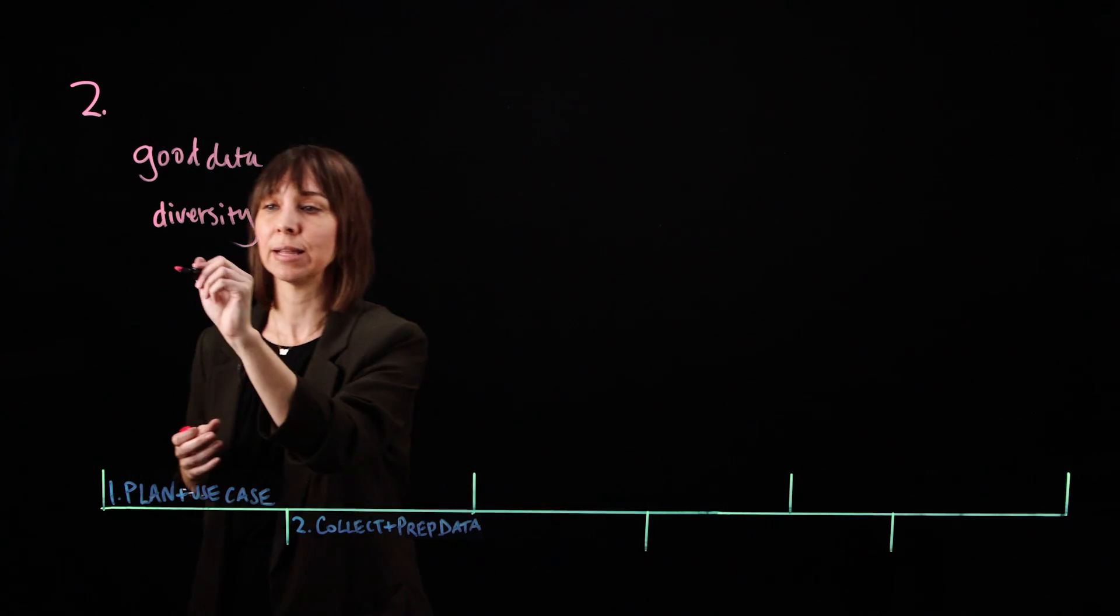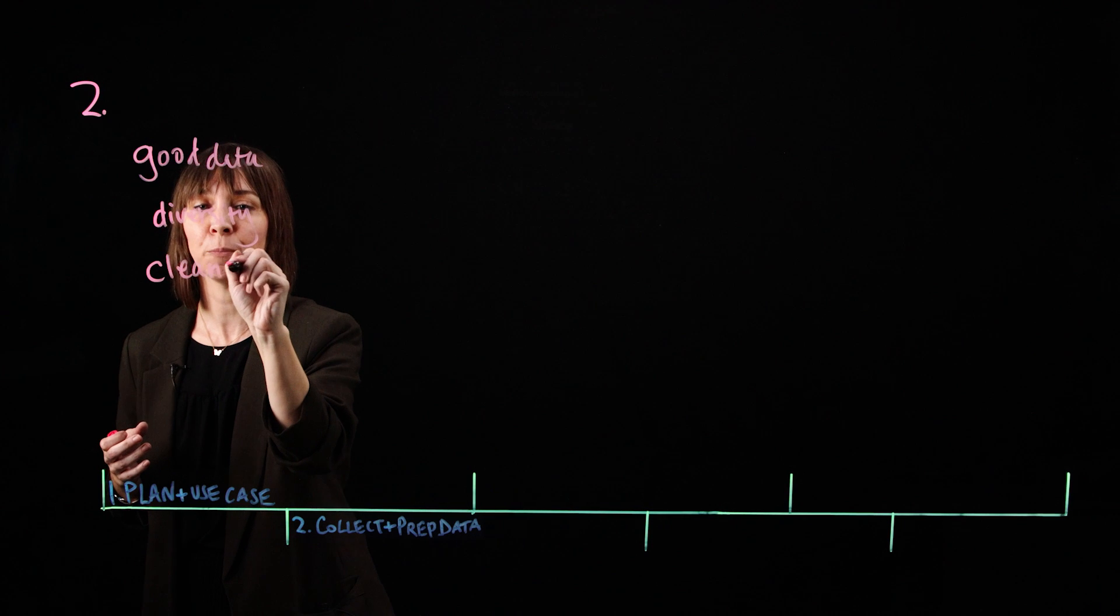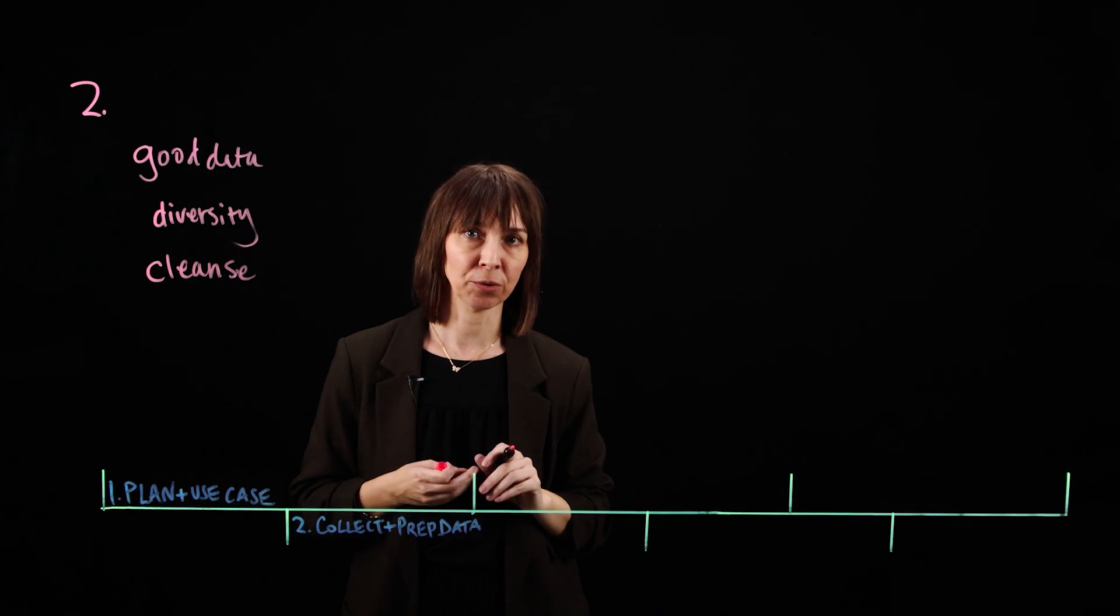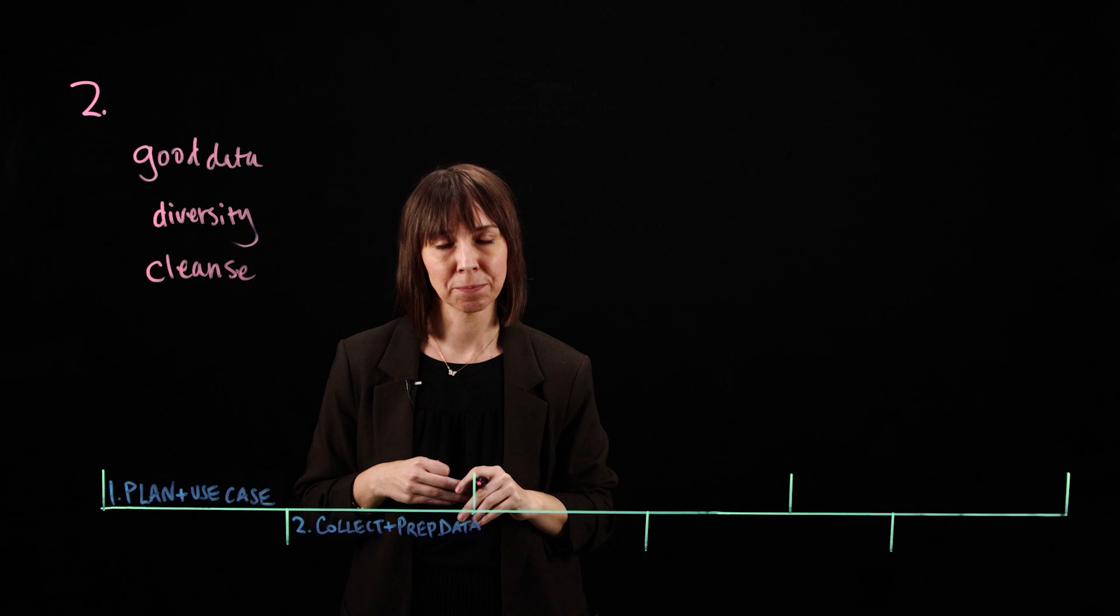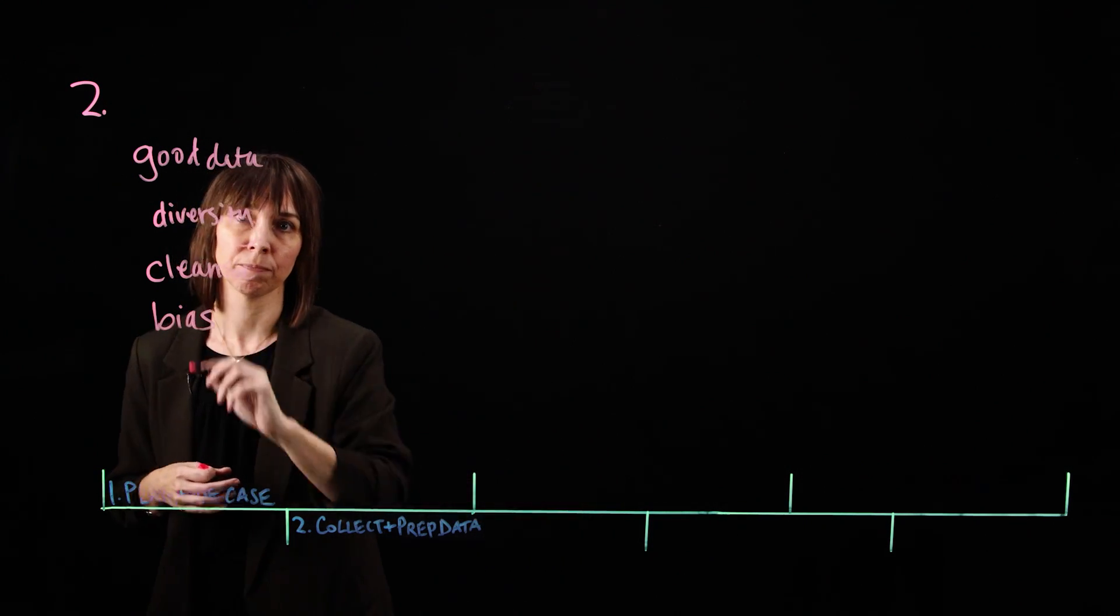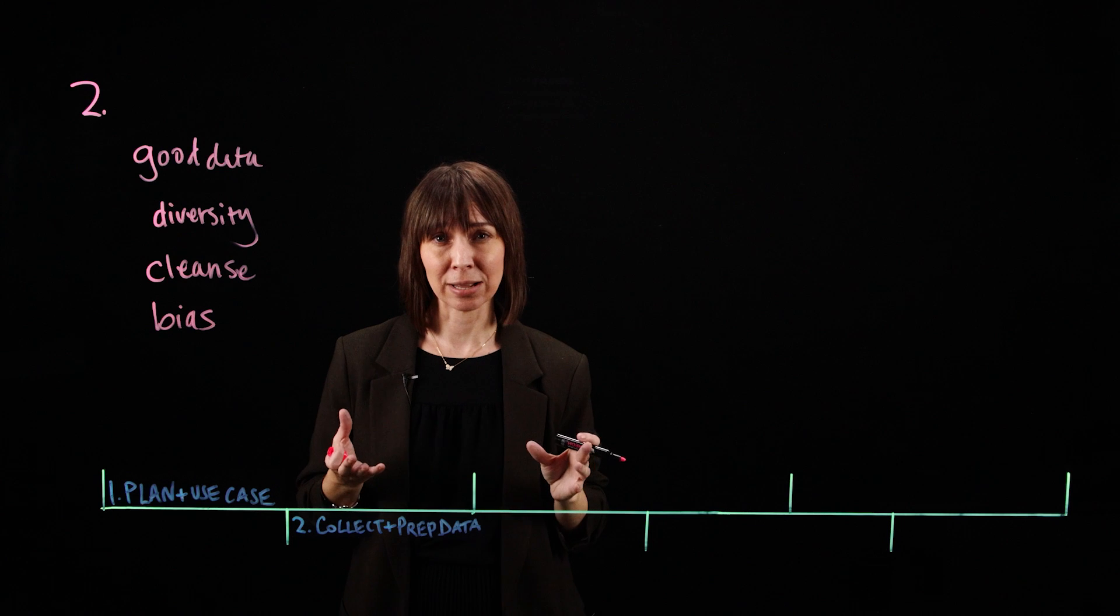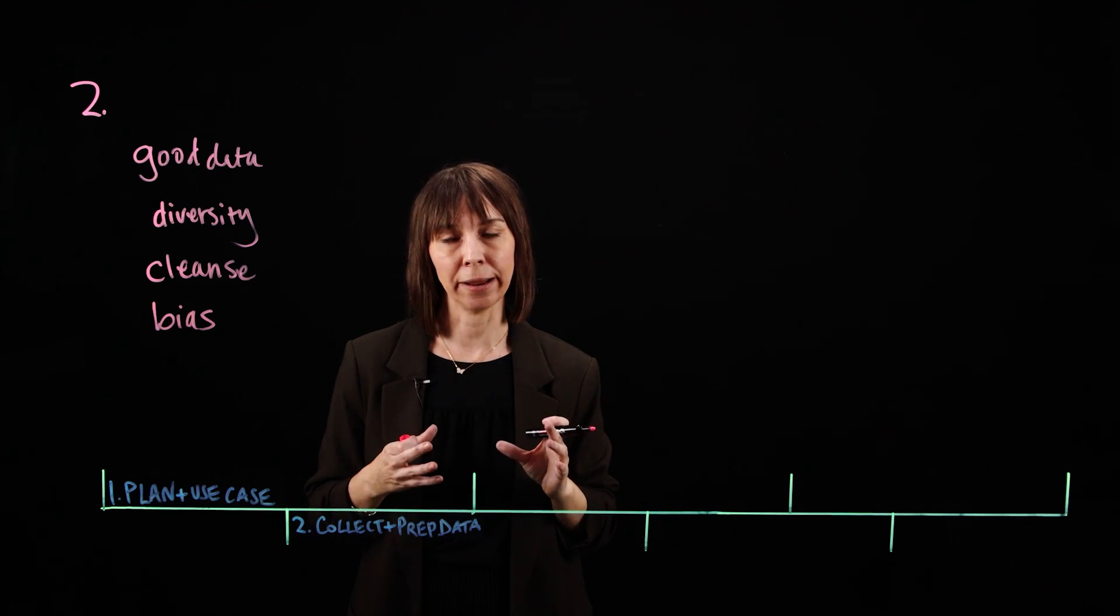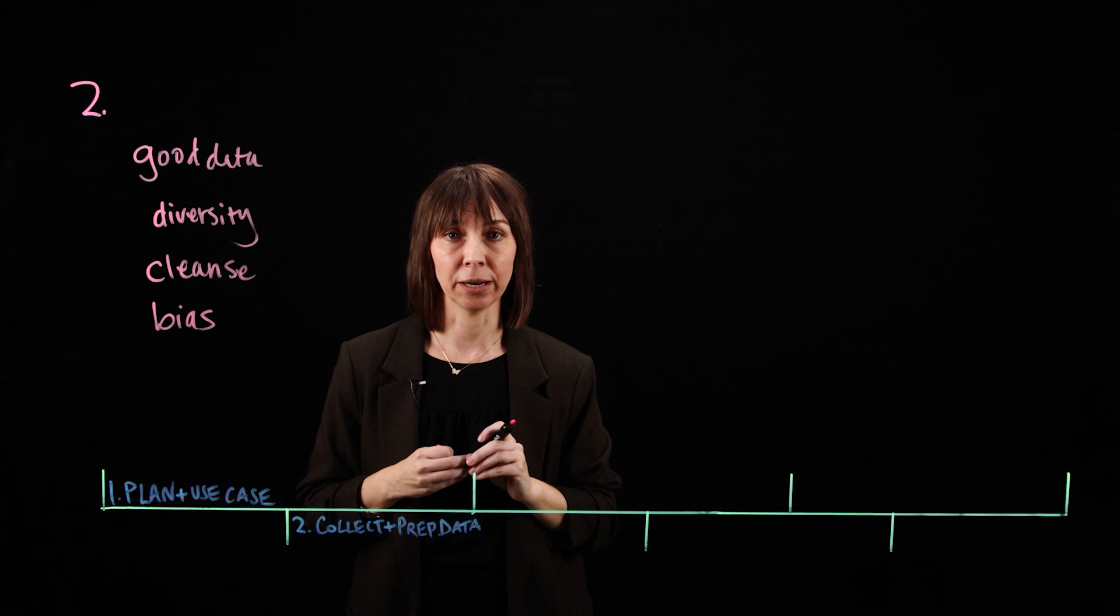Once we have what we need, let's cleanse the data by removing any PII, deduplicating, replacing missing values, and standardizing formats. Then, let's run bias checks. If the data is unbalanced, generating synthetic data to fill in the gaps is one way that we can create the balance we need.